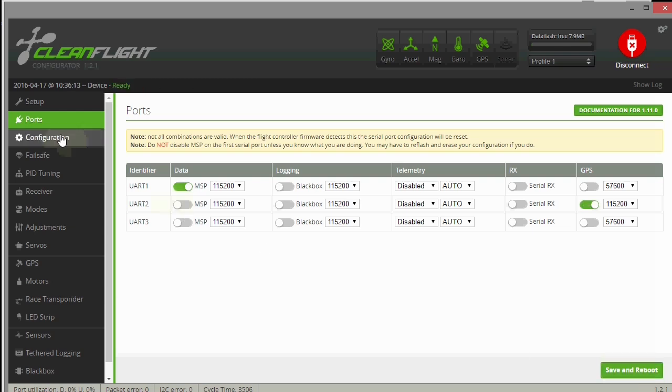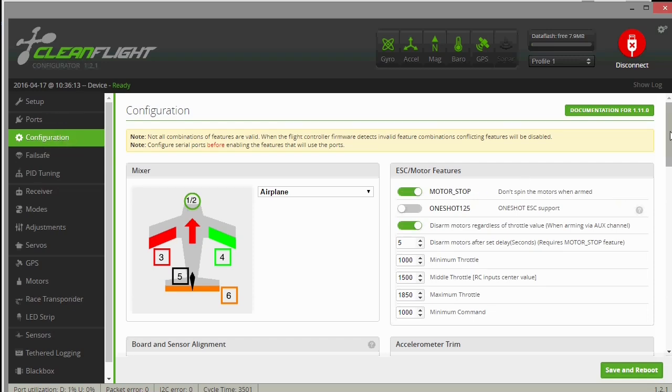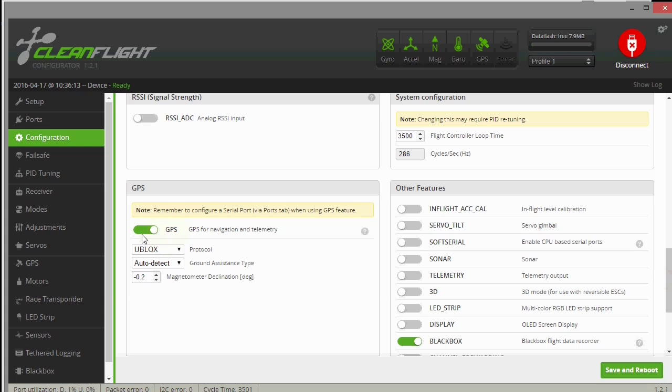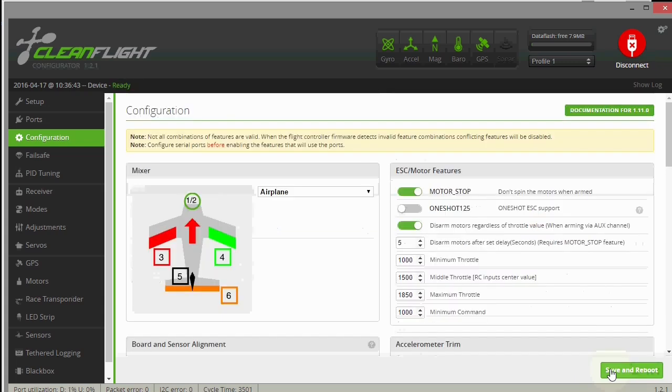And then go to Configuration, and down here, and I've already done it. I'll just show it to you again. Turn the GPS on right here, and then choose U-Blocks. That's what I'm using is a U-Blocks. I'll leave this on Auto-Detect. And you can put whatever your declination is right here for your compass. You can get that off of the internet on What's My Declination, and after that, save it, and that's pretty much all you need to do.